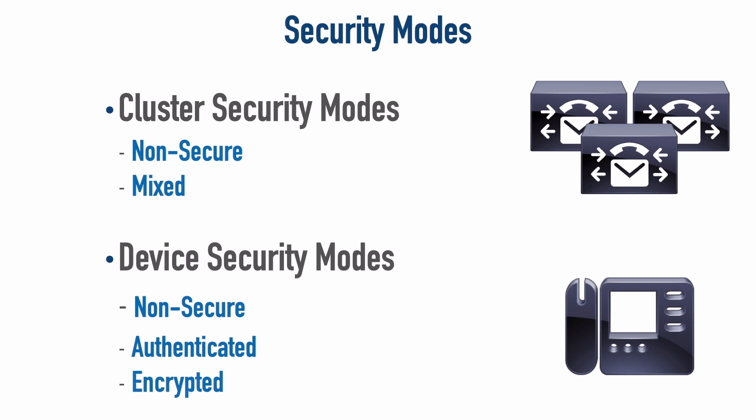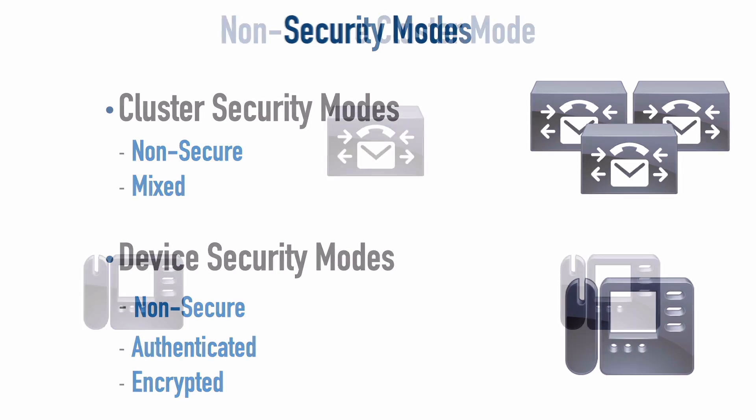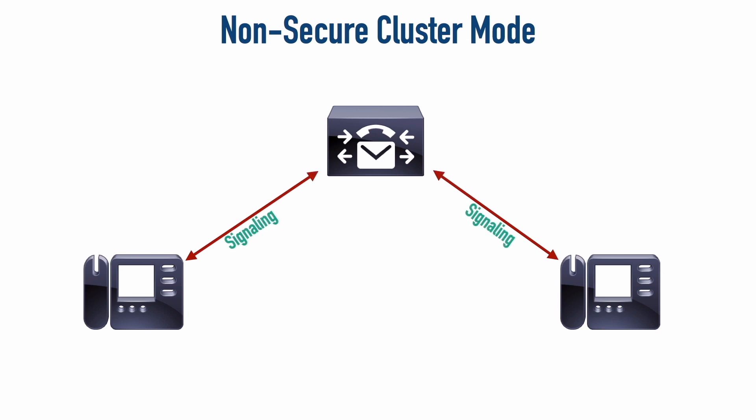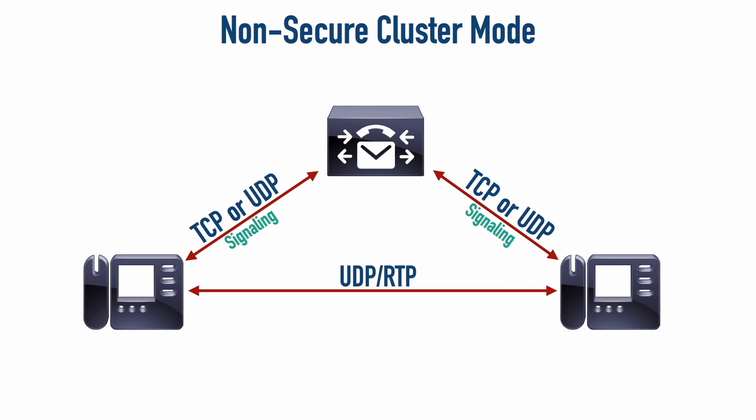In a non-secure server security mode, signaling — something like SIP or Skinny — uses TCP or UDP to send information between IP phones and Communications Manager. Once the call is set up, phones communicate directly using RTP, the real-time transport protocol — a layer 4 protocol based on UDP, carrying voice and video media. In non-secure mode, there is no authentication and no encryption.